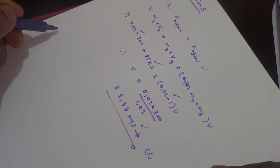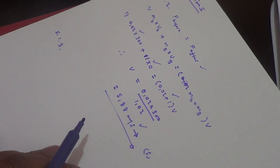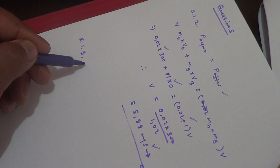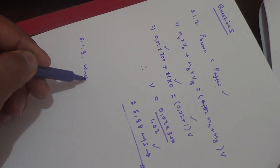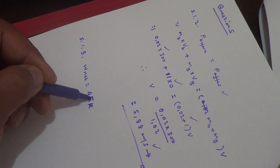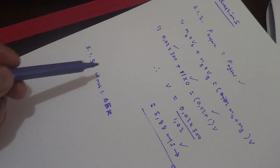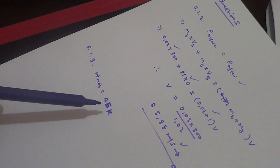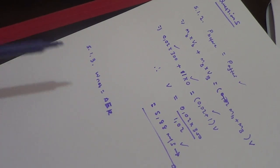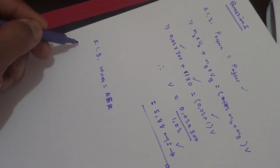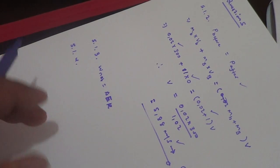That was the velocity immediately after collision — question 5.1.3. State the work-energy theorem: W_net equals the change in an object's kinetic energy. The net work done by a net force on an object is equal to that object's change in kinetic energy.